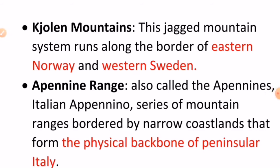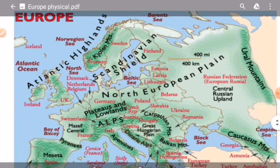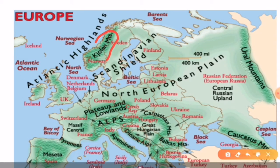The next important mountains are the Scandinavian Mountains. Such mountains often form the boundary between two countries or multiple countries, so the probability of exam questions on these is very high. These mountains form the border between Eastern Norway and Western Sweden. Locating these on your map will help you remember them, as a pictorial image stays in memory better than rote learning.